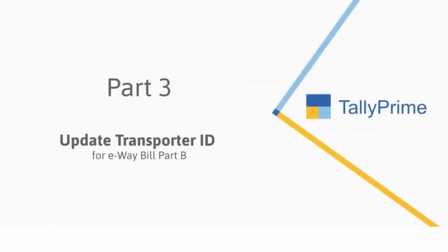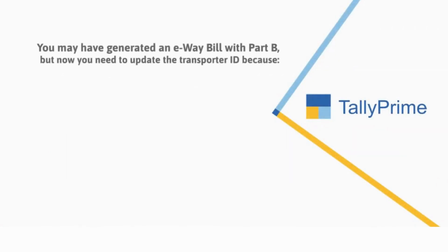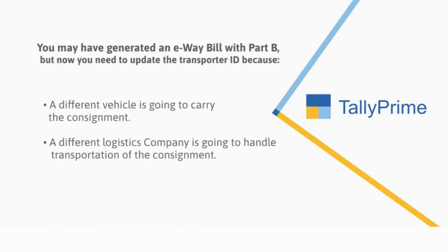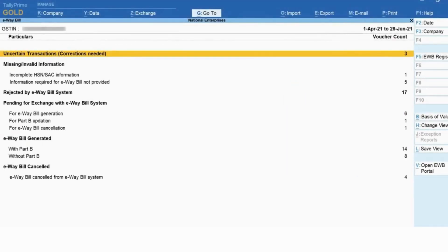Let's now take a look at the process of updating the transporter ID. You may have generated an e-way bill with Part B and now want to update the transporter ID because another transporter is replacing the existing one. This situation arises when a different vehicle is going to carry the consignment or a different logistics company is going to handle transportation. In such cases, you will need to update the transporter ID.